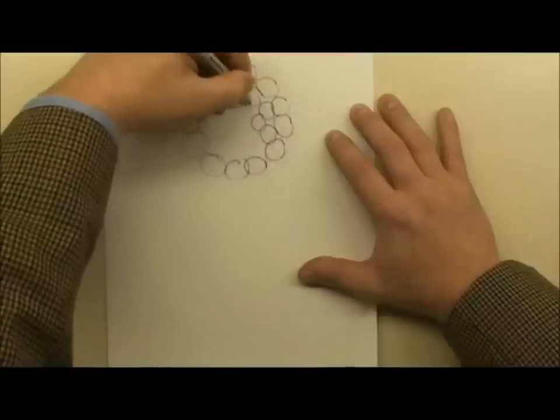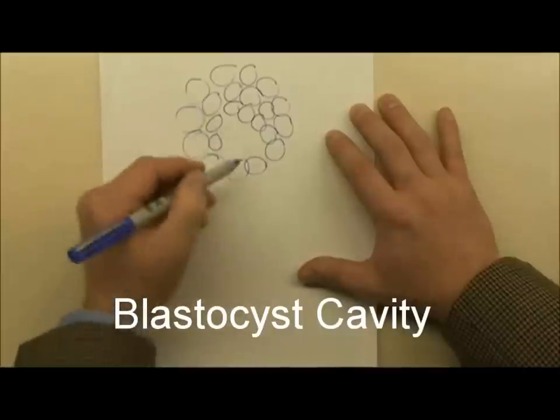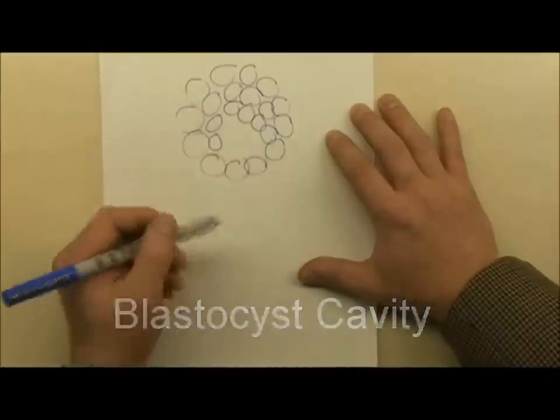As it gets larger and larger as those cells divide, that blastocyst cavity forms to allow nutrition fluid to get to and from these dividing cells.